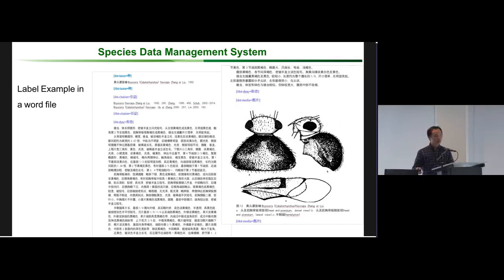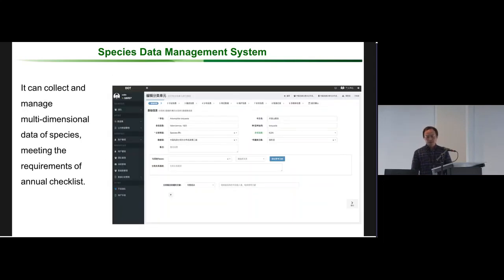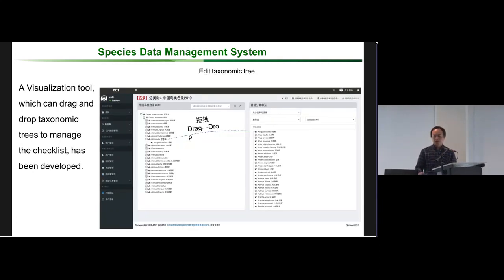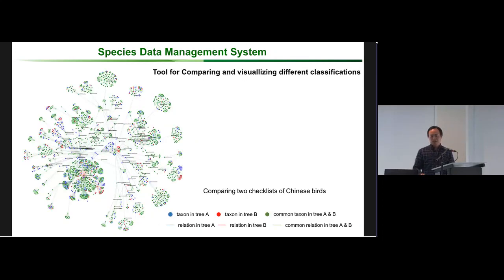We also developed a function to upload species data through an Excel file or MS Word file. We have some labels for tagging the document, and data can be extracted directly from the document and imported into the management system. You can also collect multidimensional data for species. We also have a visualization tool for taxonomic tree management — drag and drop is simple to use.